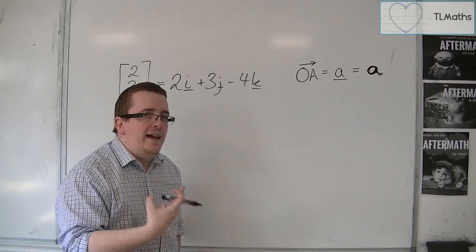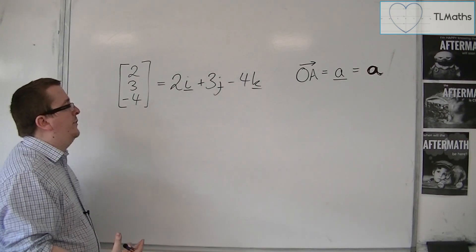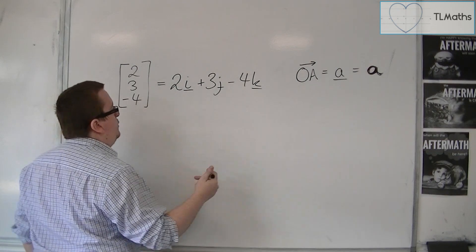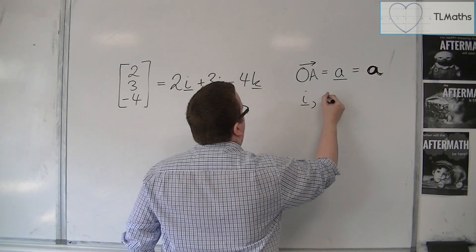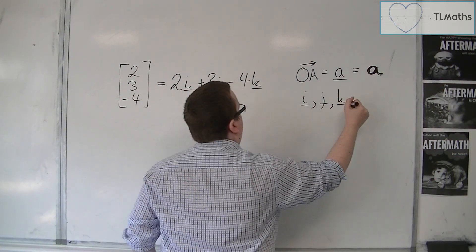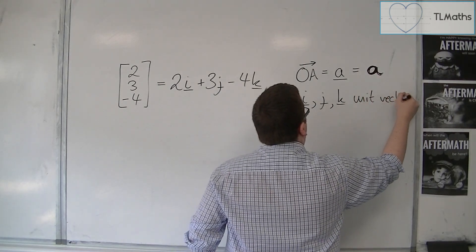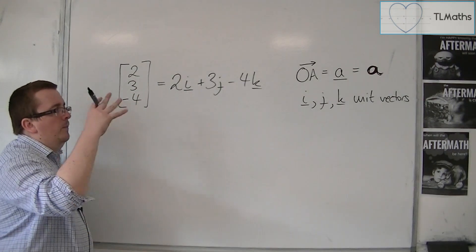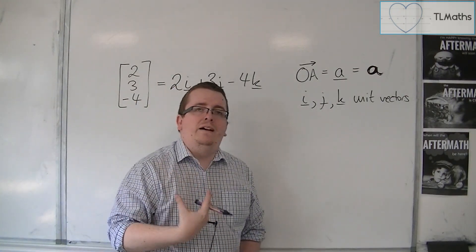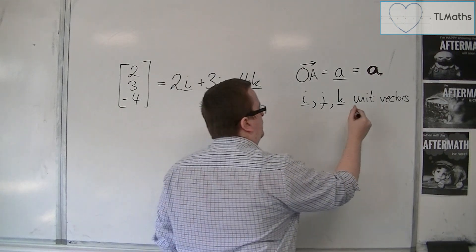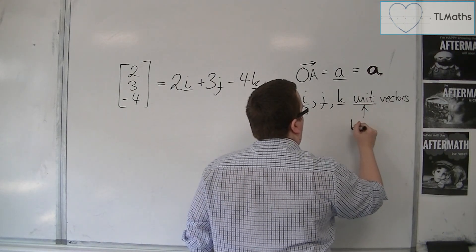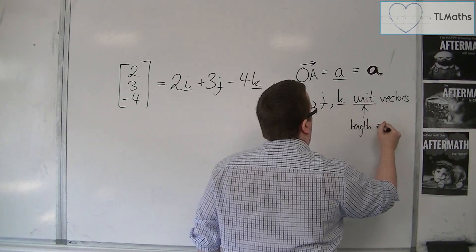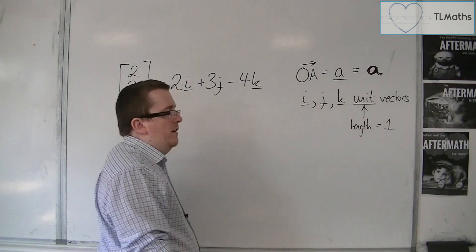But this i, j and k have themselves names. They are known as unit vectors. i, j and k are unit vectors. And by unit, I mean they have length 1. They have length equal to 1 if they are a unit vector.